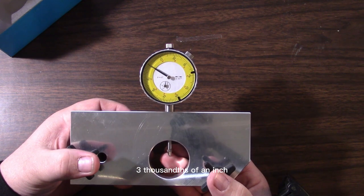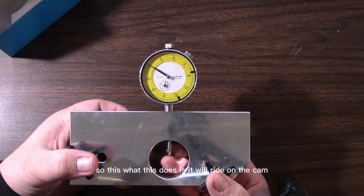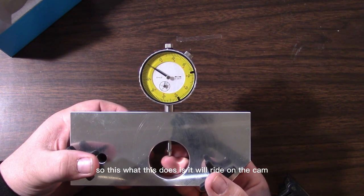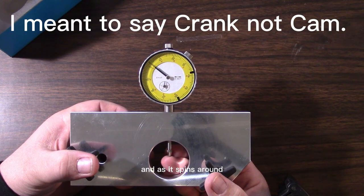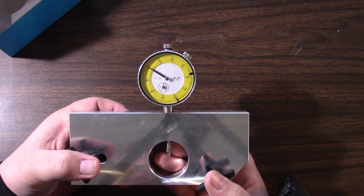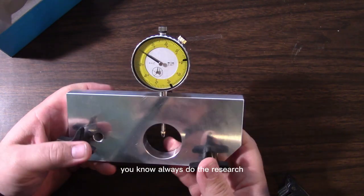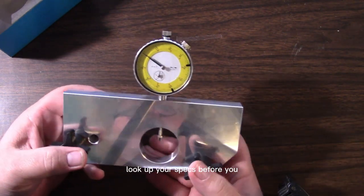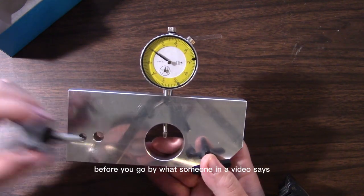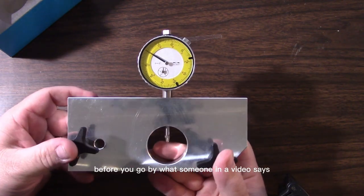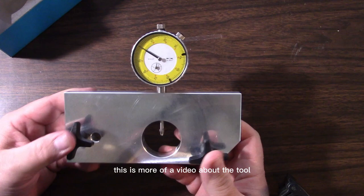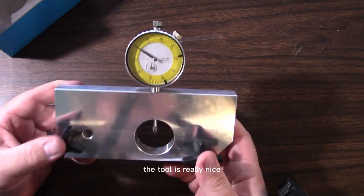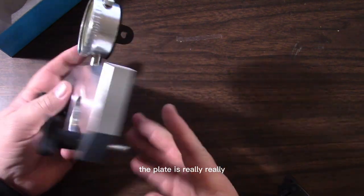What this does is it will ride on the cam, and as it spins around it's going to show you the deflection in the cam. Always do the research and look up your specs before you go by what someone in the video says. This is more of a video about the tool.